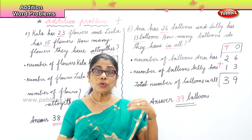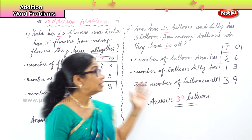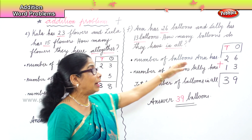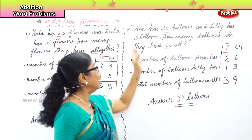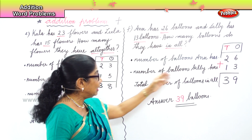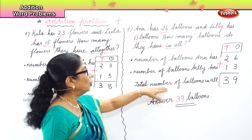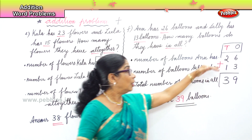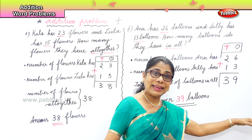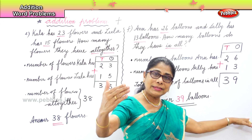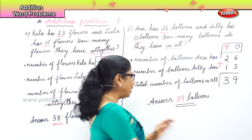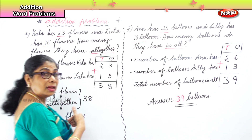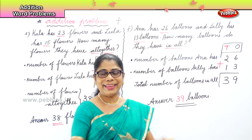There are always three statements for an addition word problem: number of balloons Anne has — so much; number of balloons Sally has — so much; therefore total number of balloons in all. Then we place the numbers correctly, add the ones first, then the tens, and write down the answer — how many balloons, or how many flowers, or how many whatever.